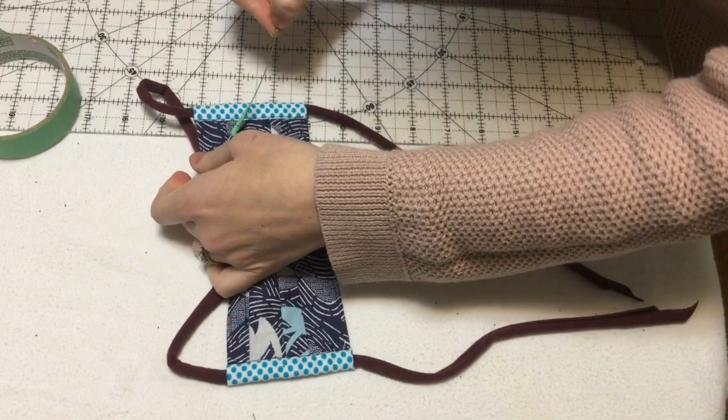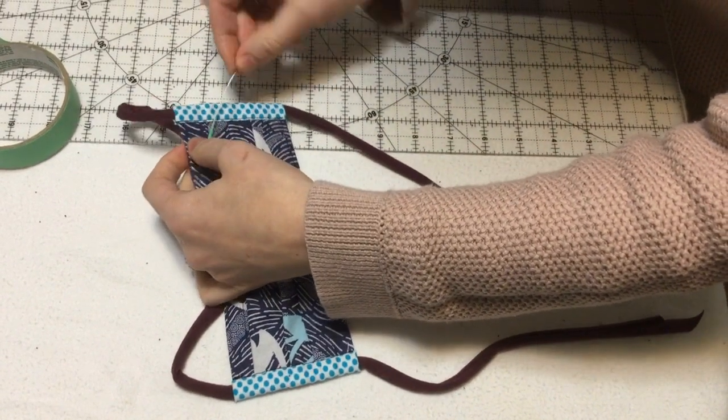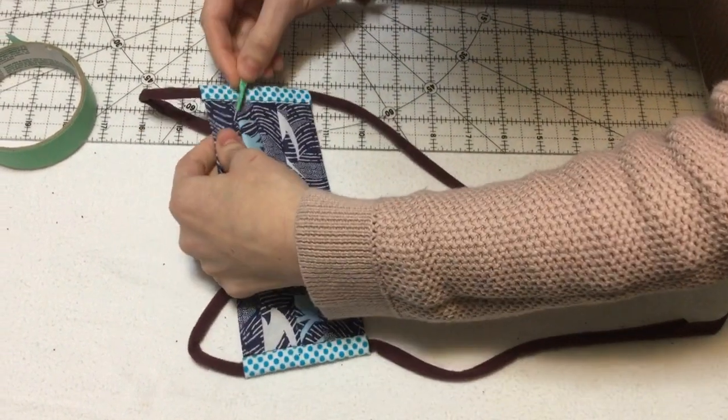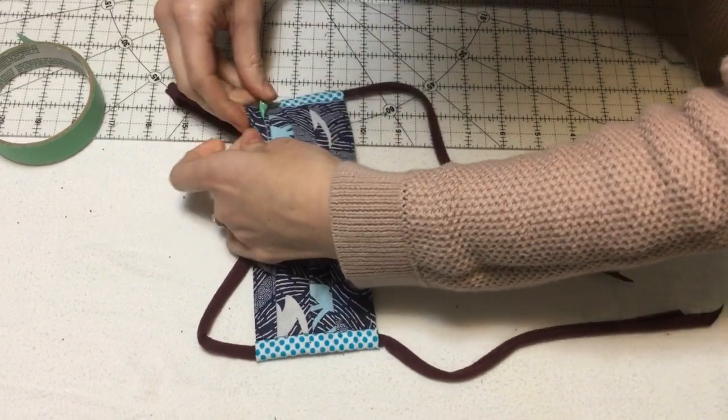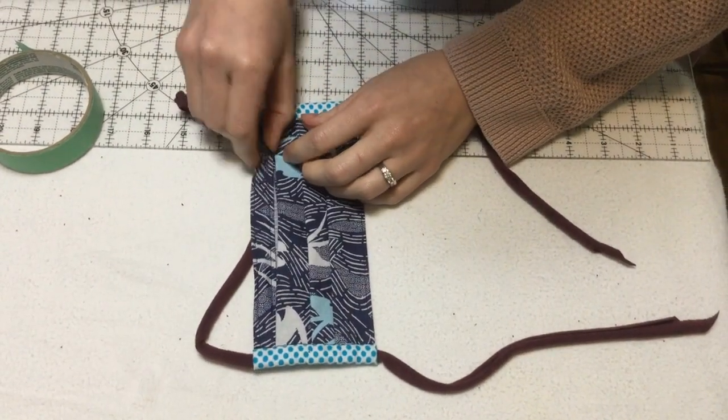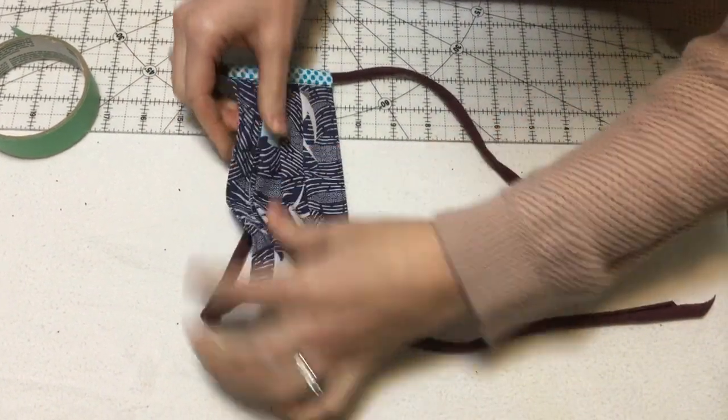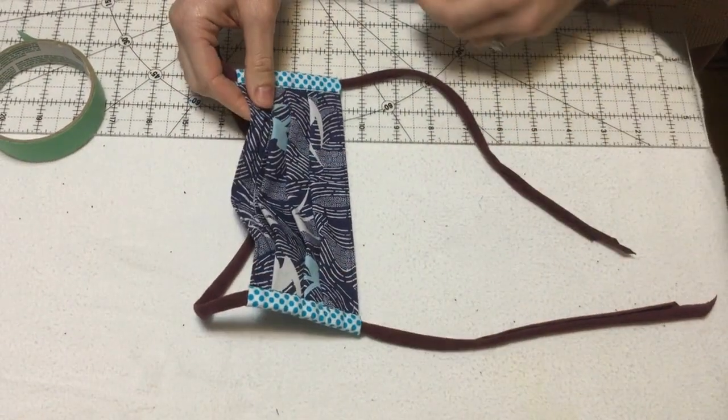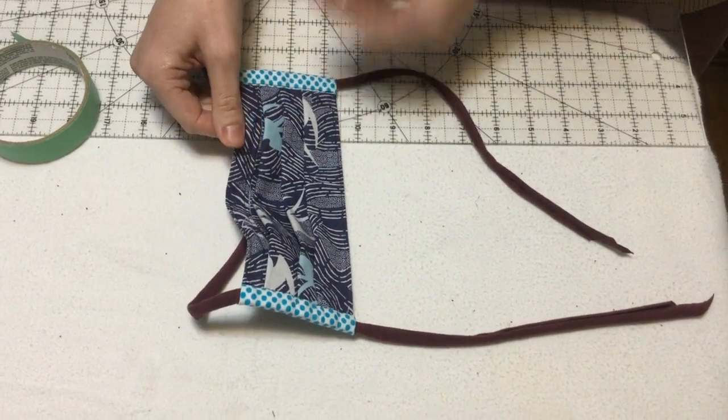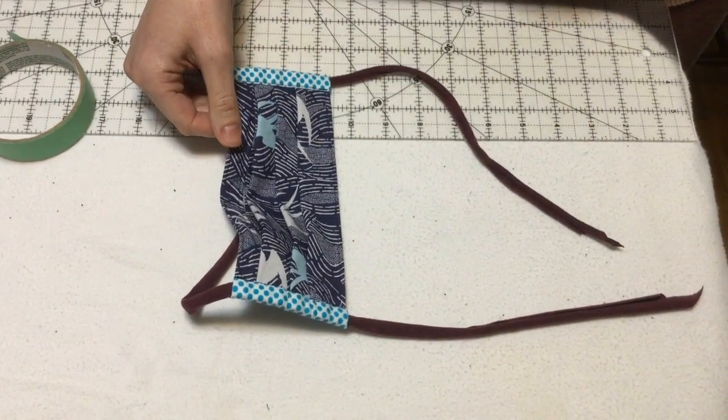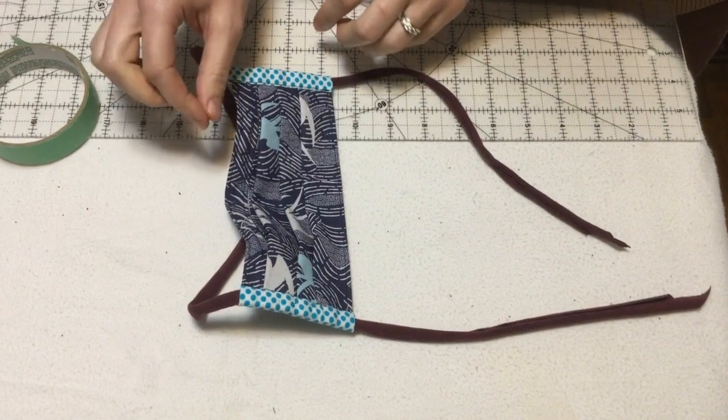Once that's been done, you can take the wire and thread it up into the nose channel. There you go, a nice fitted mask. Before you wash the mask you can take that wire out so it won't get damaged or deformed in the wash and then put it back in.